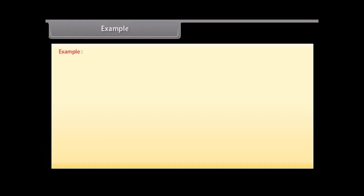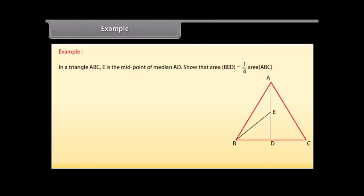Example: In a triangle ABC, E is the midpoint of median AD. Show that area of BED is equal to one-fourth of area of triangle ABC.